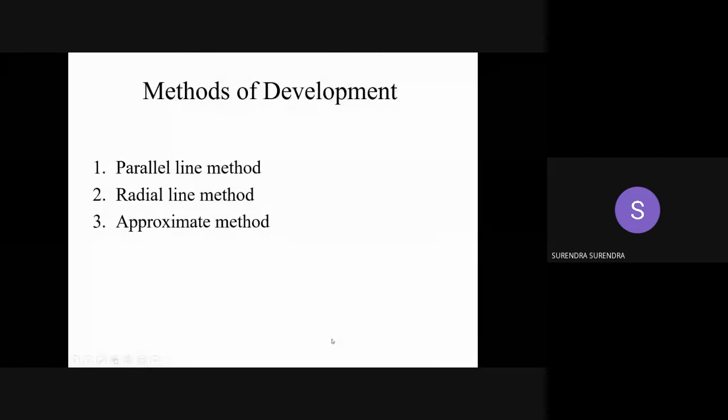And now, in this development, there are three types: parallel method, radial method and approximate method. We are not discussing the approximate method. Parallel line method is useful for the prisms because in prisms, all the slant edges are parallel to each other. But in pyramid, if you open the pyramid, all the slant edges are not parallel. It looks like radial lines for a circle. So for pyramids, we're going to follow the radial line method.